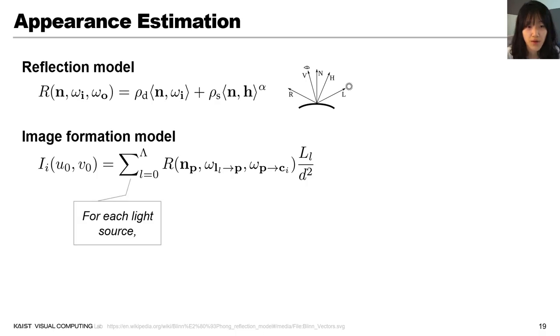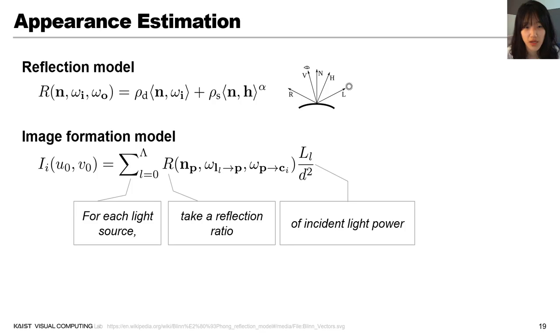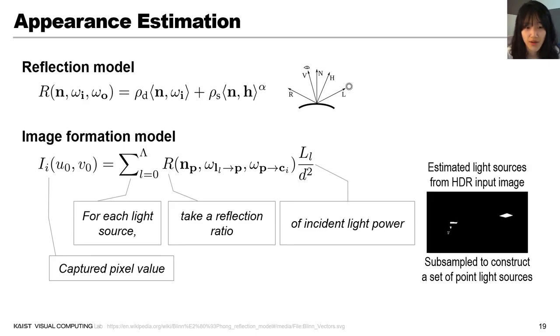Parameters for this model are diffuse albedo, specular albedo, and specular smoothness. Our image formation model is discrete summation over light sources. For each light source, take a reflection ratio of incident light power. With the captured pixel value, we then evaluate unknown parameters in our image formation model.